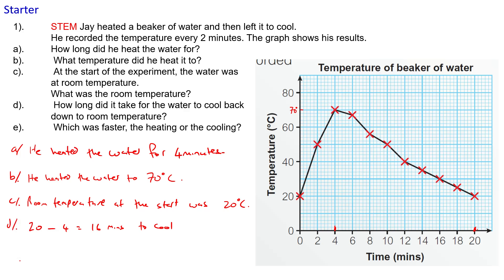I'm just going to rub out that degree there. There we are, 16 minutes to cool. Good. And e: which was faster, the heating or the cooling? Well, the heating took 4 minutes from 20 to 70, but the cooling from 4 to 20 took 16 minutes. So heating was faster.